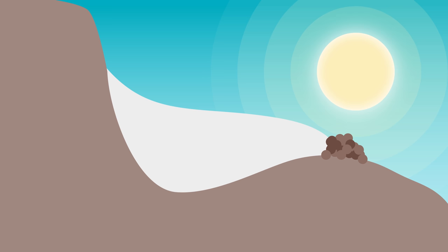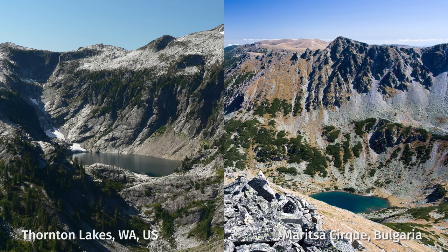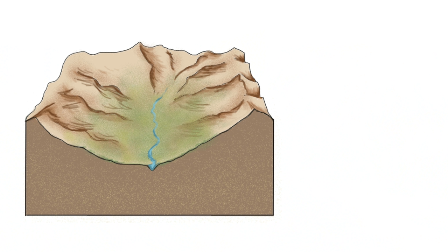Cirque glaciers will leave behind cirques or corries, which will oftentimes be filled with a small moraine-dammed lake known as a tarn. Tarns may be seasonal or persistent.